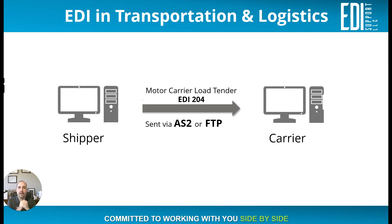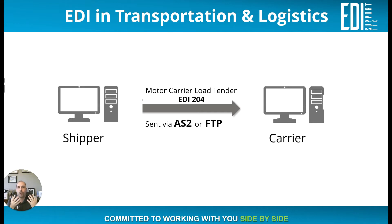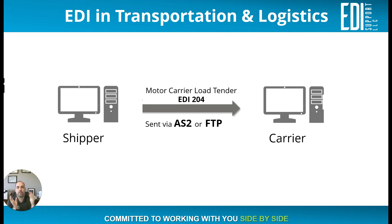One of the terms you're going to hear is 3PL — third-party logistics. That means it's an entity or organization that's basically storing your goods that need to be shipped to a prospective location — to a warehouse, a customer's house, or similar. Third-party logistics handles the storage of your product and getting it shipped to a location.